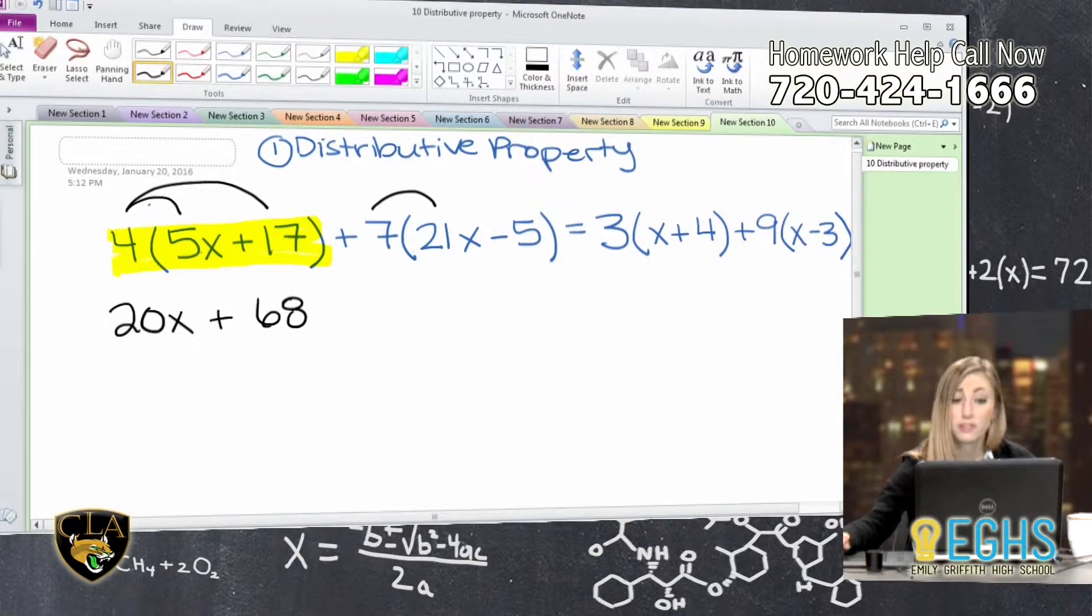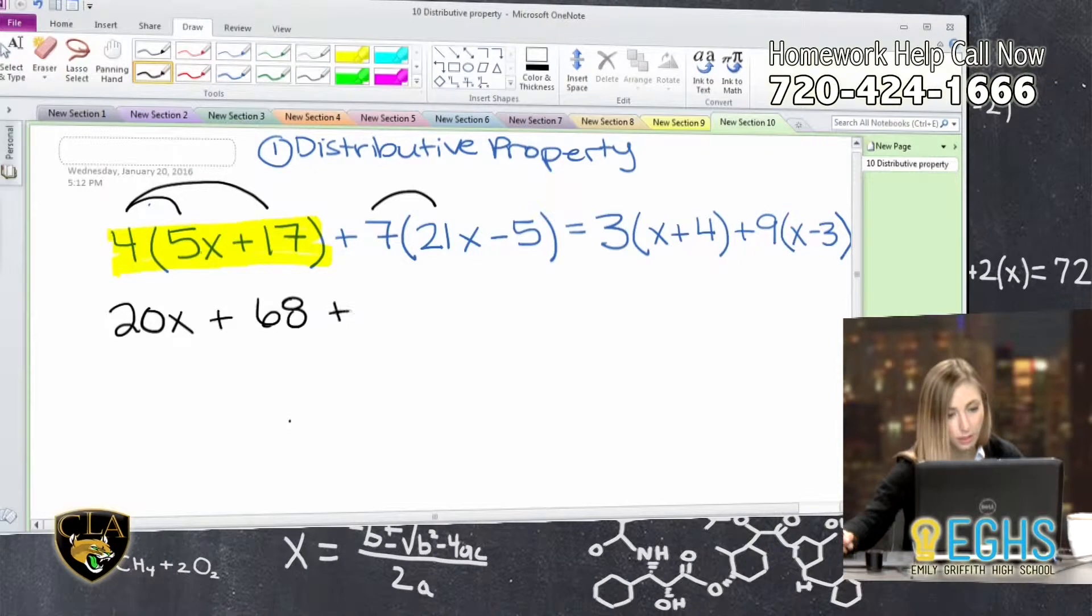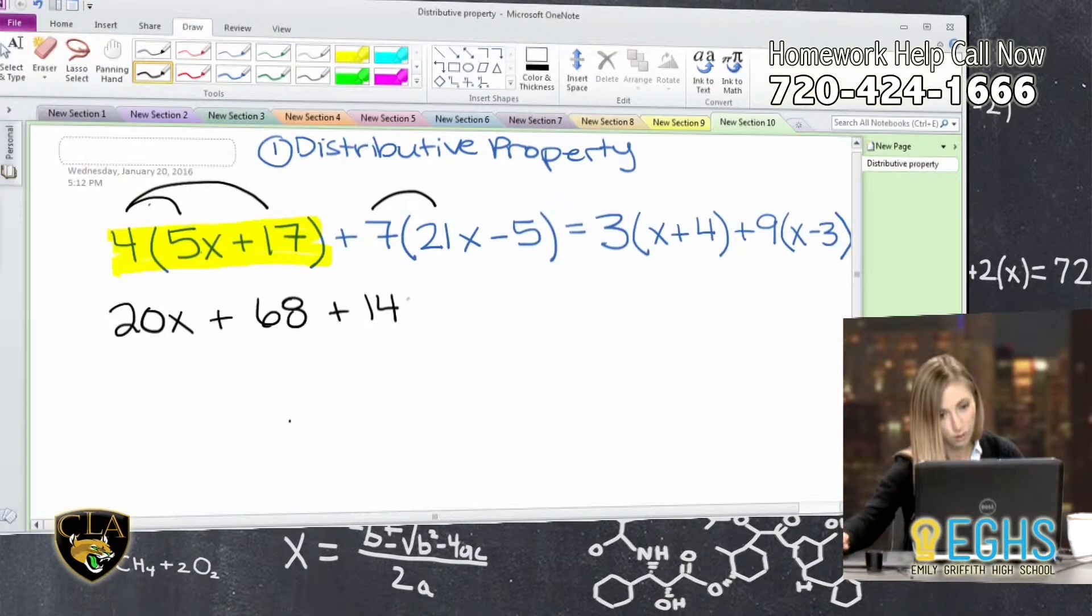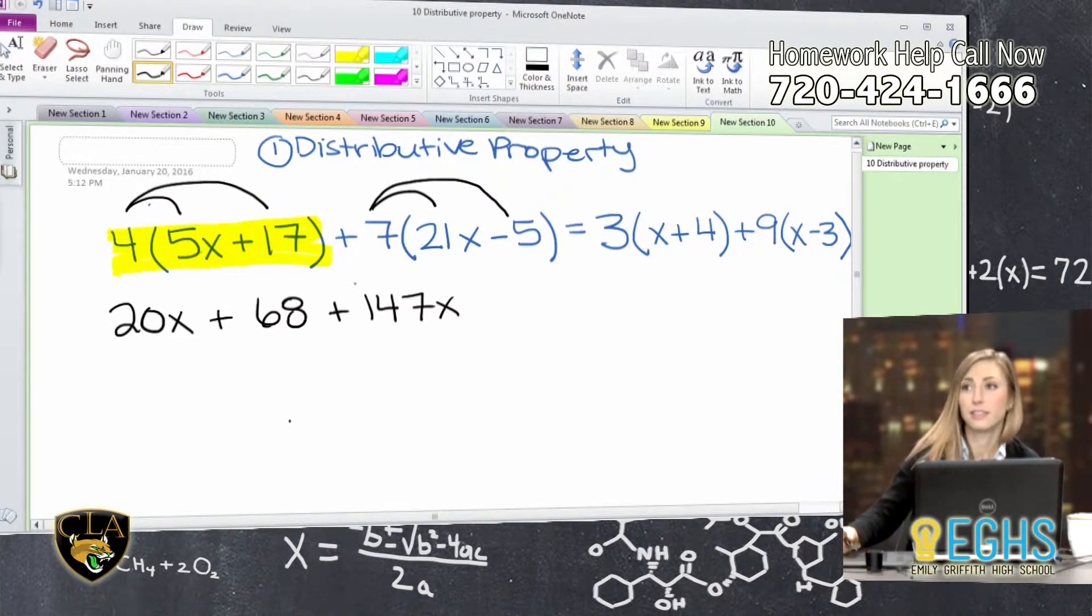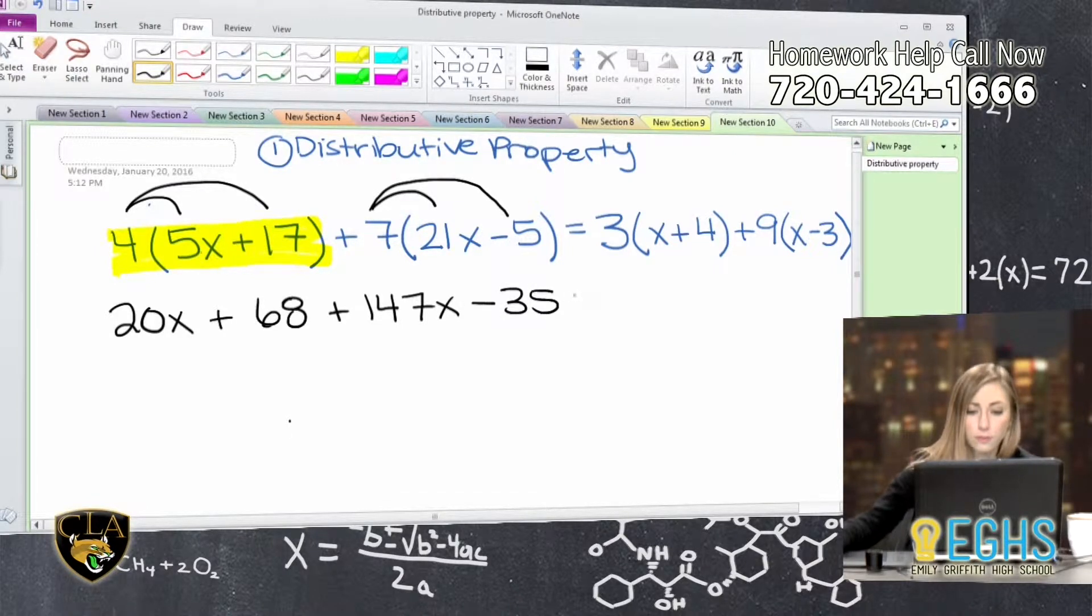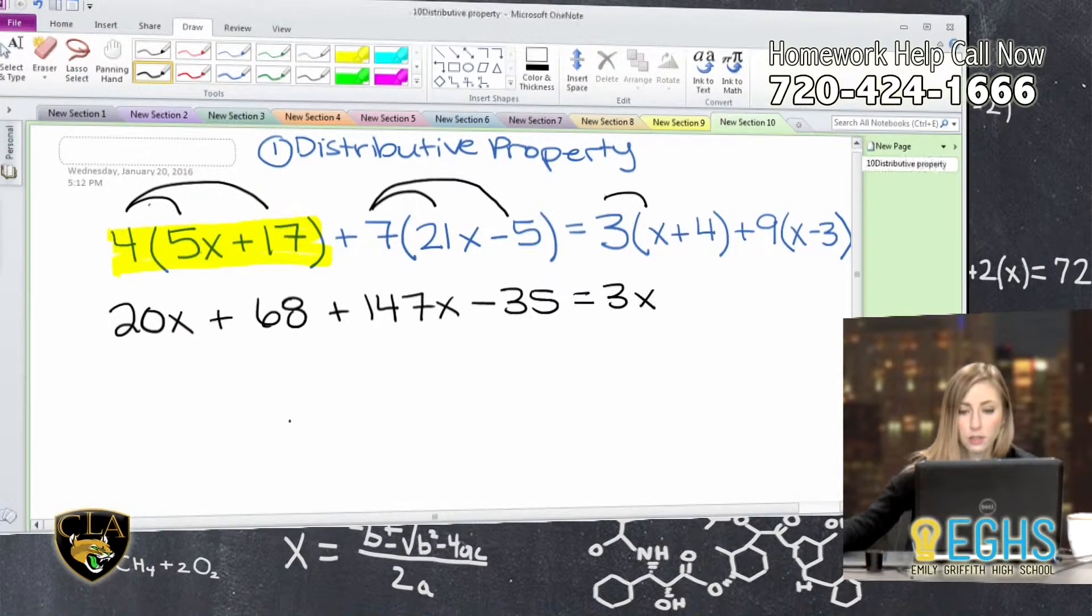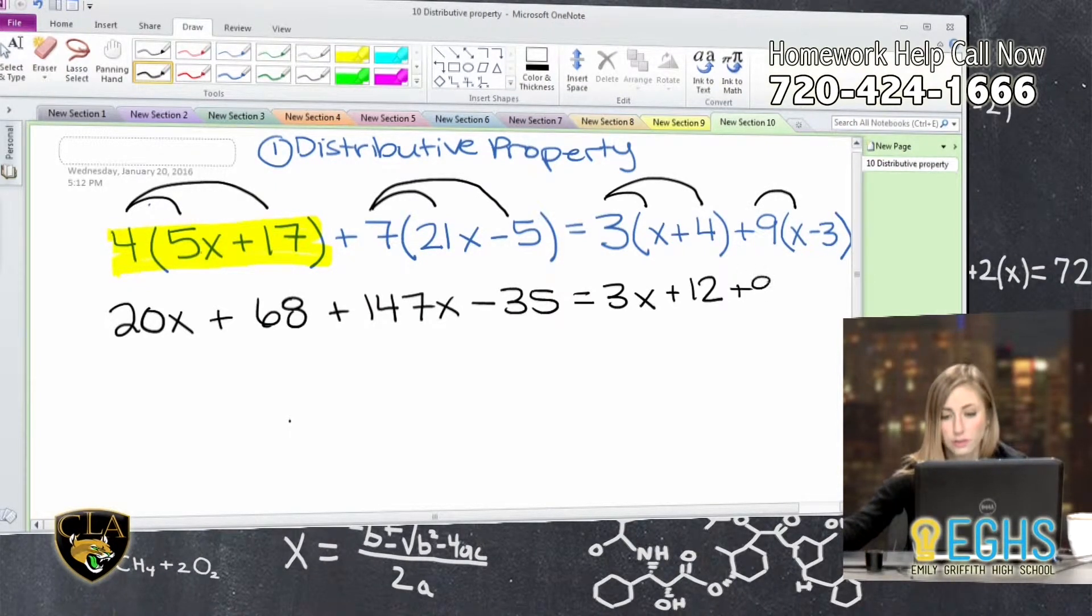So that's the first one. And we'll do a similar thing to the rest of them. So plus 7 times 21x, so 7 times 21x is going to give me 147x. And then we also need to do 7 times, and this time we'll think of this as negative 5, so minus 35. And then again we'll continue. So 3 times x, 3x. 3 times 4, 12. And then keep continuing. Plus 9 times x, so plus 9x. And then 9 times negative 3, negative 27.